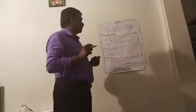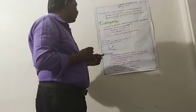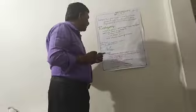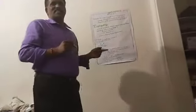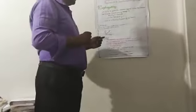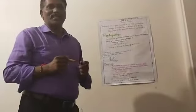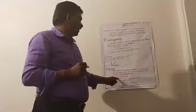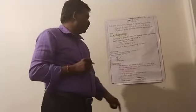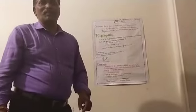Now let us see the resistance. The resistance of a conductor is defined as simply the ratio of the potential difference across the conductor to the current through it. So resistance R is equal to V by I.